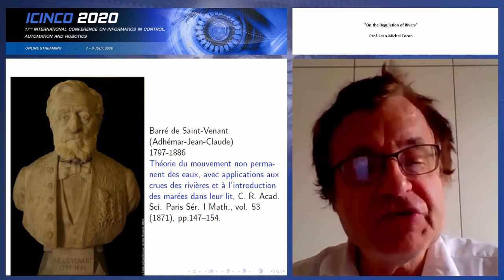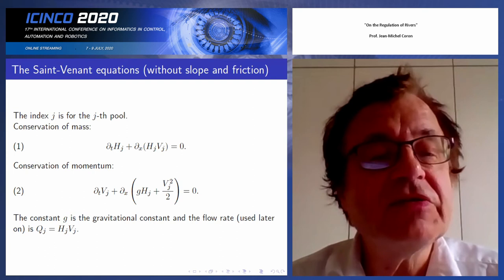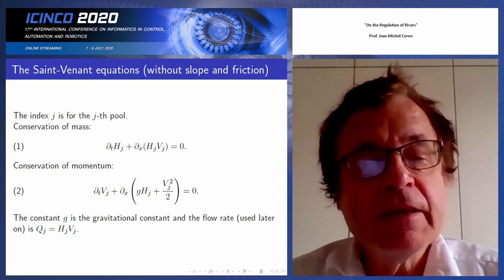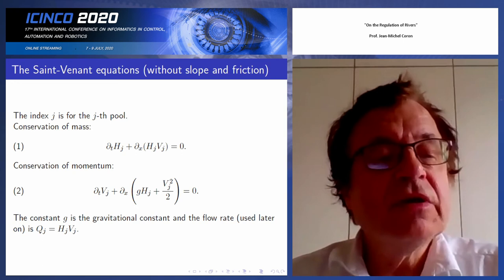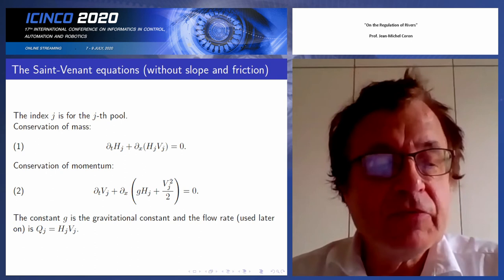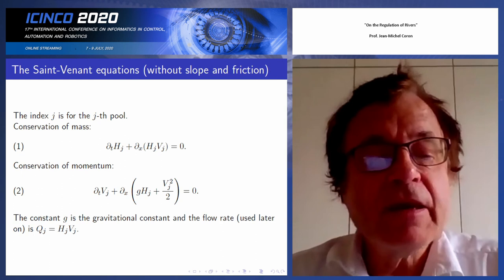There are two equations. The first equation is a conservation of mass: the partial derivative with respect to t of the height h_j — where j is the index of the pool — plus the derivative with respect to x of the flow rate, which is the product h times v, equals zero. The second equation is conservation of momentum: the partial derivative with respect to time of the velocity plus the derivative with respect to x of g times h plus v squared divided by 2 equals zero, where g is the gravitational constant.